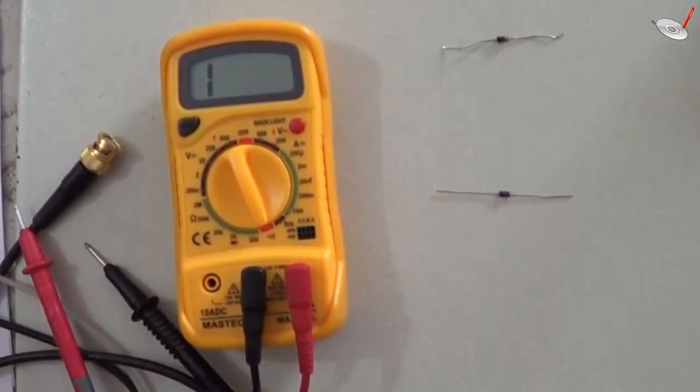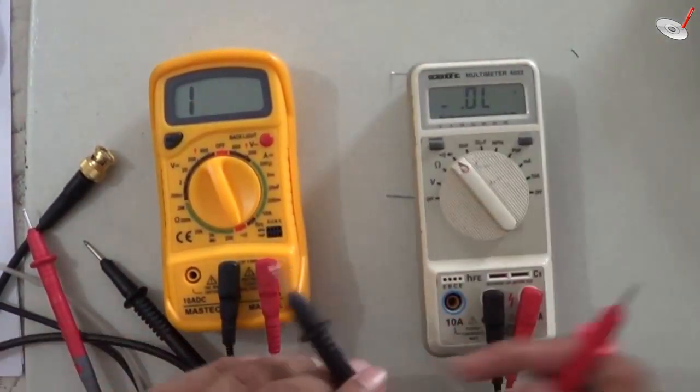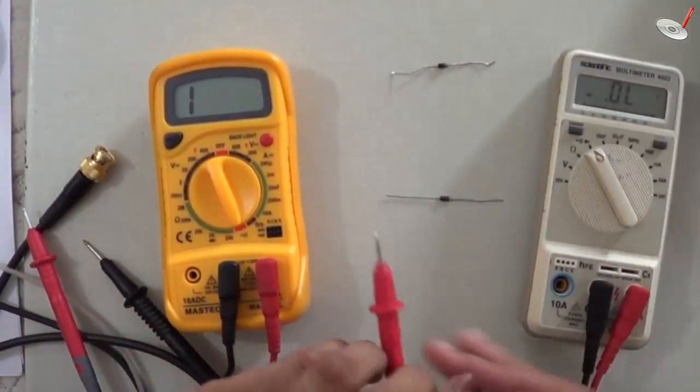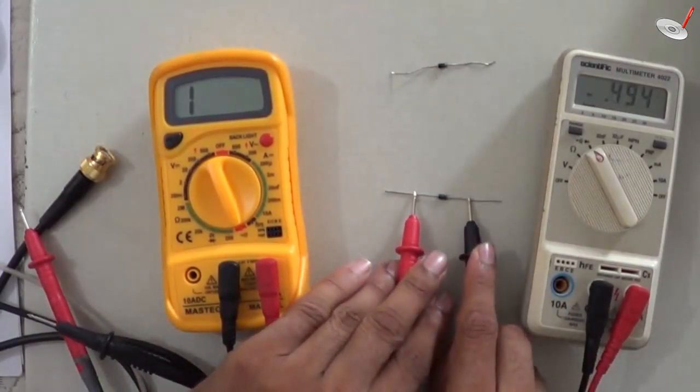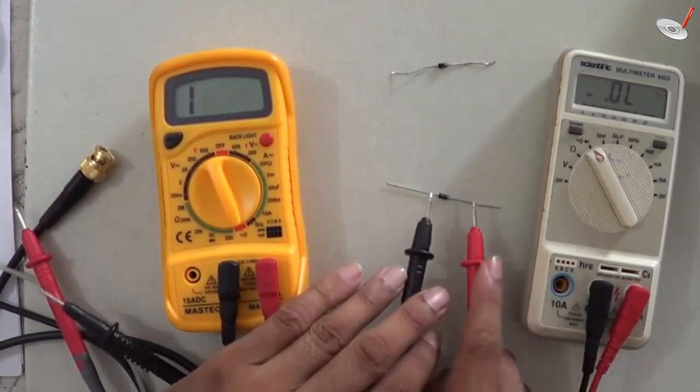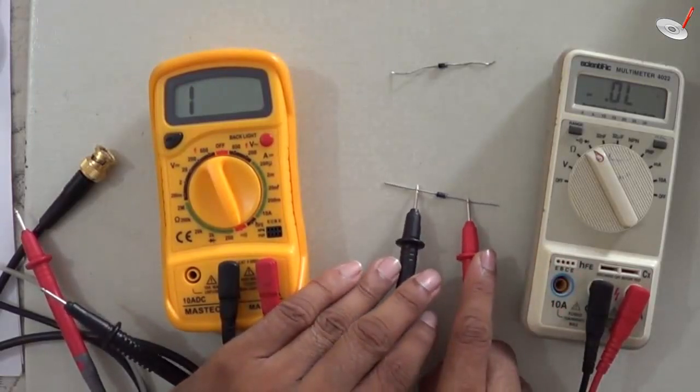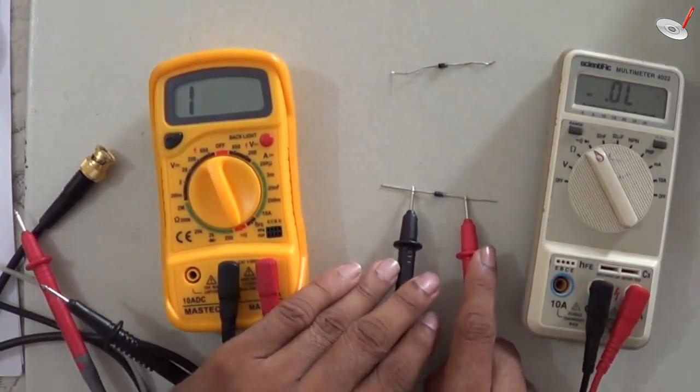If I reverse the connections, there will be no voltage. So in this way you can verify your diode also.